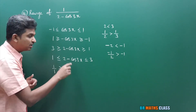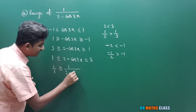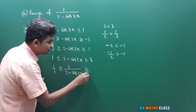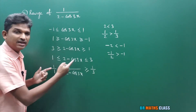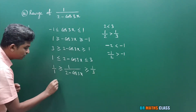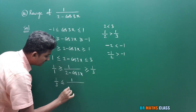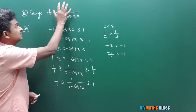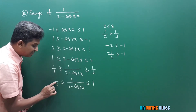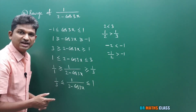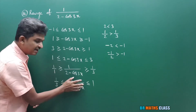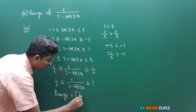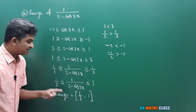Writing the reciprocal of this inequality: 1 divided by (2 minus cos3x), with the inequality sign changing — less than or equal to changes to greater than or equal to 1 by 3. Writing in reverse order: 1/3 ≤ 1/(2 minus cos3x) ≤ 1. This function's value lies between 1/3 and 1. So the range of this function is the closed interval [1/3, 1].